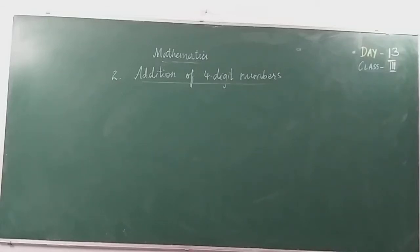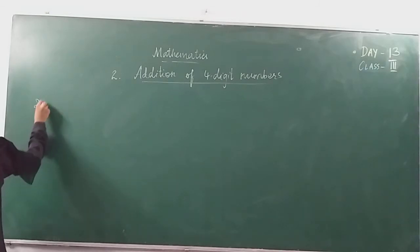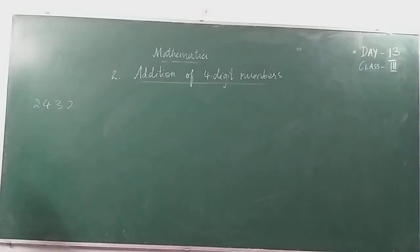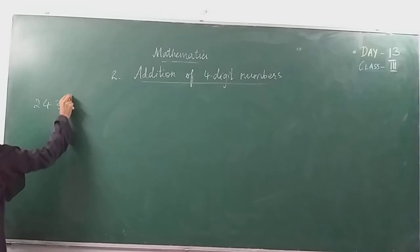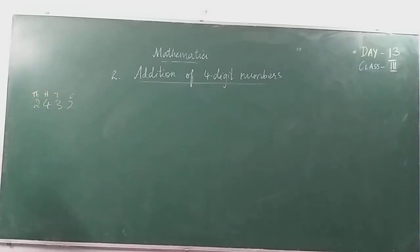Assalamualaikum everybody. Today we will start our second chapter of mathematics, that is addition. In the last videos we have learned about four-digit numbers, so I'll put a four-digit number here: 2432. The place values — we always write from the right side: ones, tens, hundreds, thousands. We are covering four-digit numbers up to thousands.